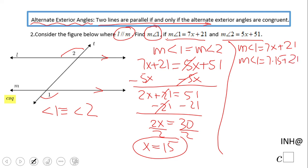Seven times 15 is 105, 105 plus 21, that will be 126 degrees. The measure of angle 1 is 126 degrees.